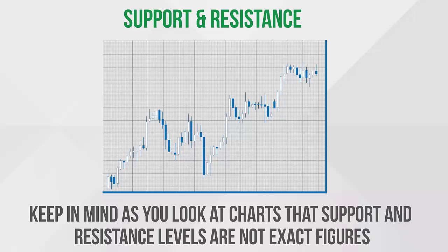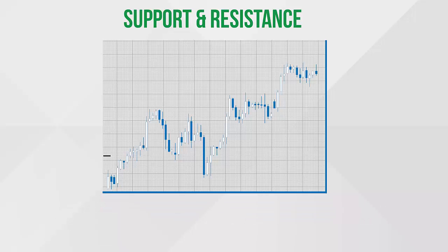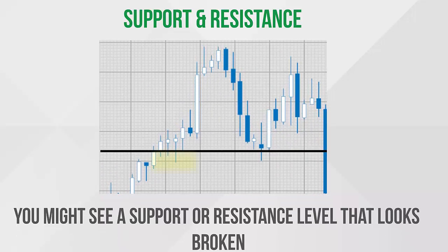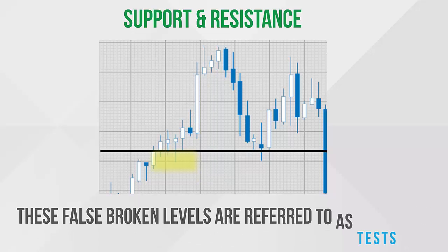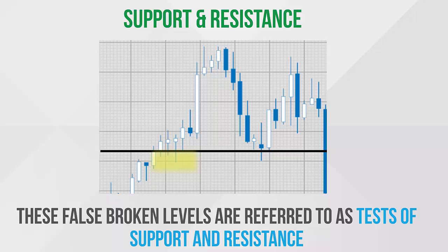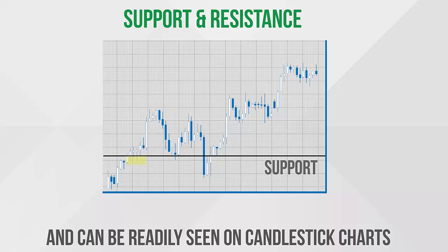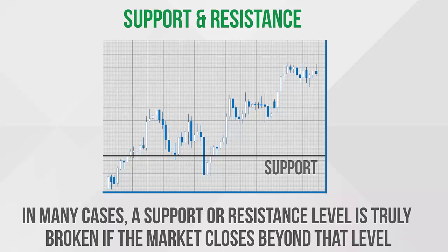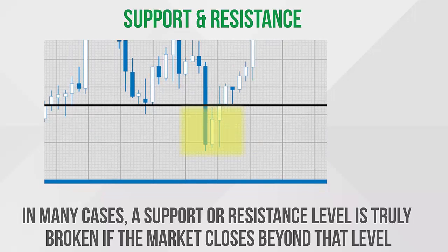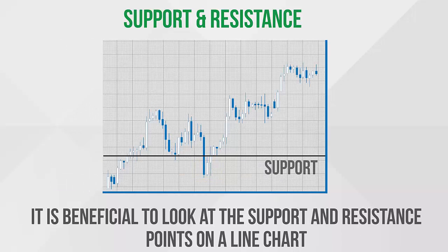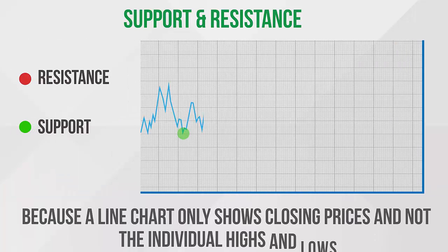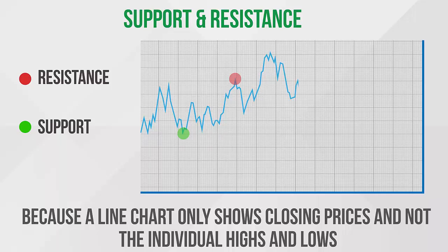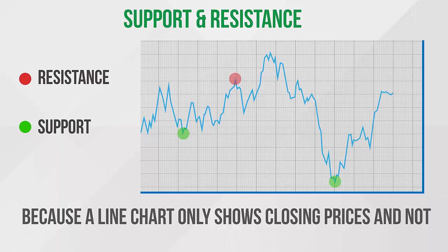These points are what give the chart its zigzag appearance. Keep in mind that support and resistance levels are not exact figures. You might see a support or resistance level that looks broken, but if you keep watching you will see that the market was simply testing the level. These false broken levels are referred to as tests of support and resistance and can be readily seen on a candlestick chart. In many cases, a support or resistance level is truly broken if the market closes beyond that level. However, since this is not always true, it is beneficial to look at support and resistance points on a line chart.